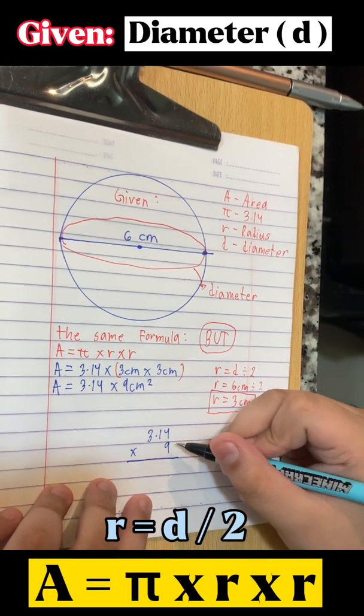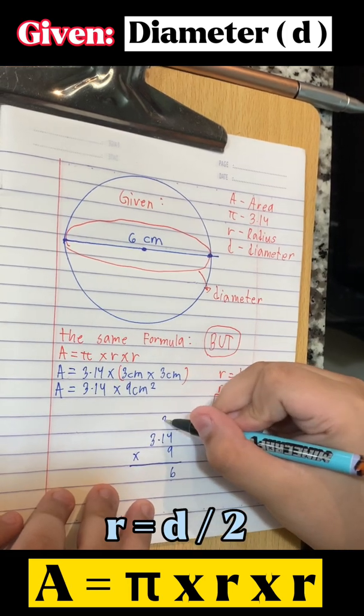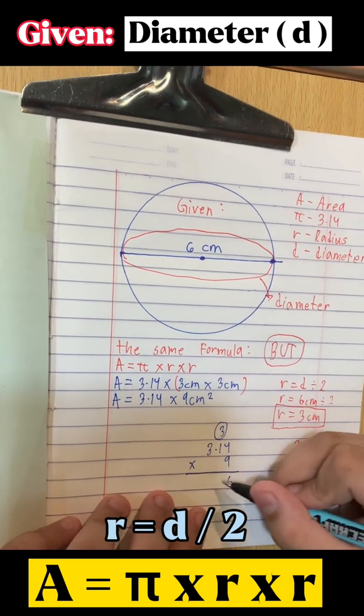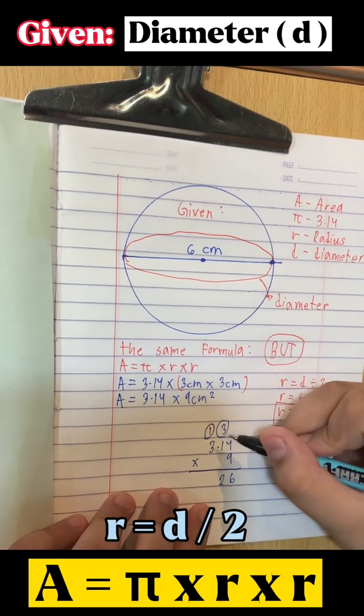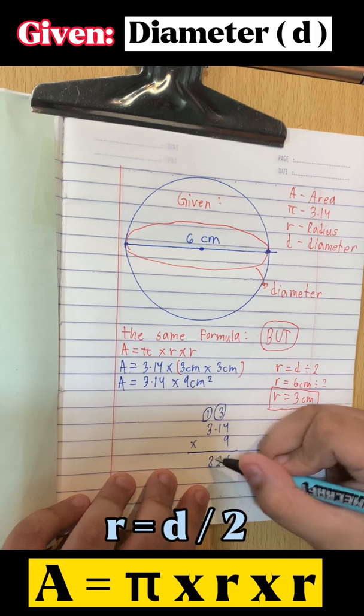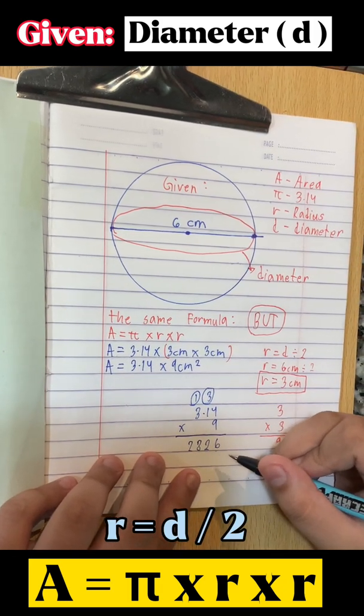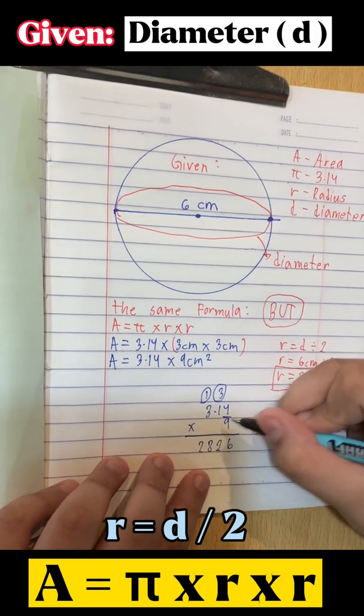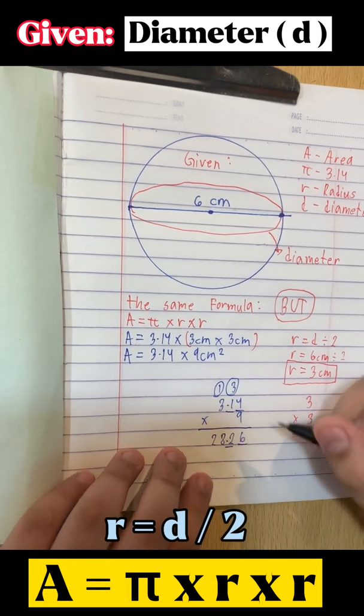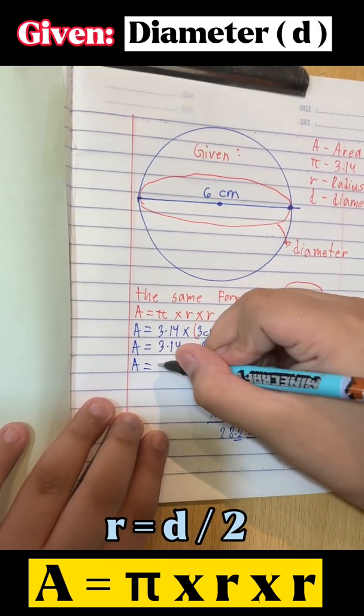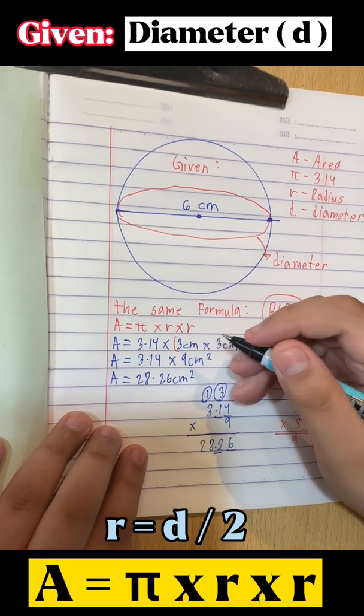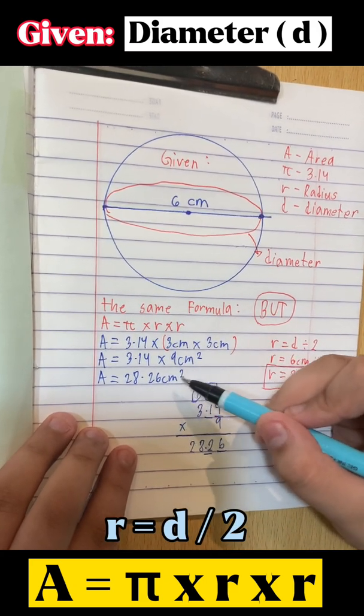9 times 4 equals 36. 9 times 1 equals 9 plus 3 equals 12. Count the decimal places: 1, 2. Here you have it, there's your area: 28.26 cm².